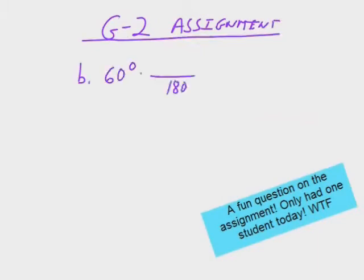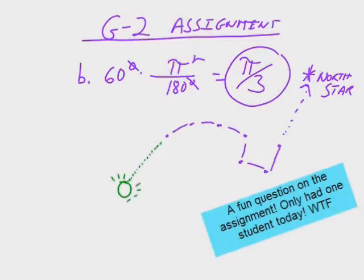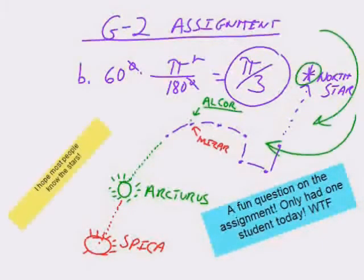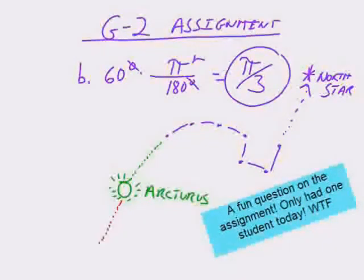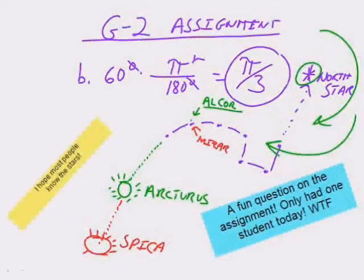We also looked at astronomy — follow the arc to Arcturus and speed on to Spica. Mizar and Alcor — you can actually check your eyesight with those. We were trying to find what 60° was in radians.